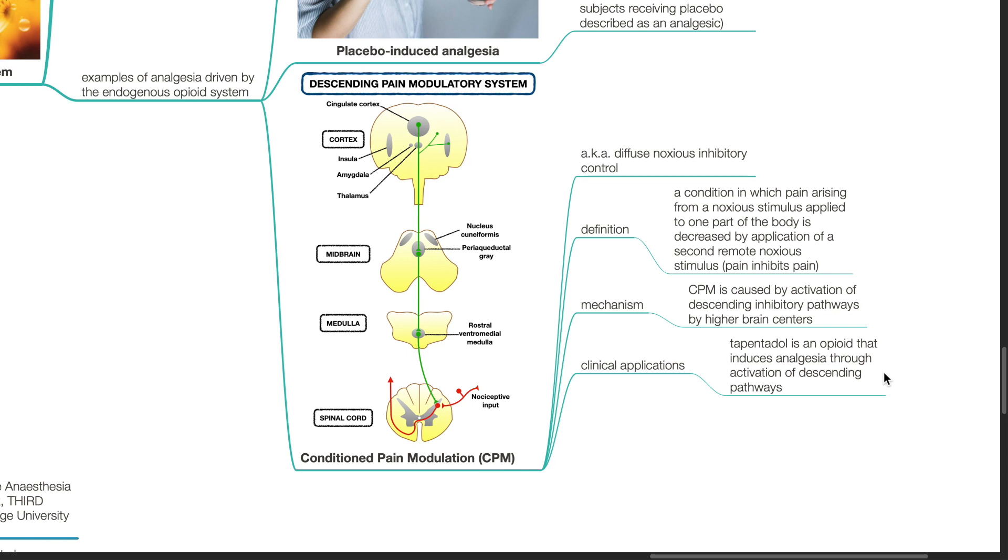Conditioned pain modulation, also known as diffuse noxious inhibitory control, is a condition in which pain arising from a noxious stimulus applied to one part of the body is decreased by application of a second remote noxious stimulus, i.e., pain inhibits pain. CPM is caused by activation of descending inhibitory pathways by higher brain centers. CPM is an opioid that induces analgesia through activation of descending pathways.